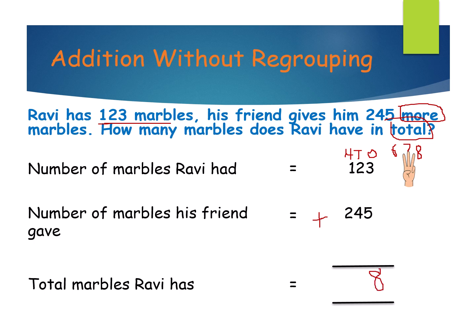Now in the tens place, the digits are 2 and 4. Which is the biggest number? 4 is the biggest number. Keep 4 in your mind and open 2 fingers. What is 4 after? 4 after 5, 5 after 6. What is 2 plus 4? 6.